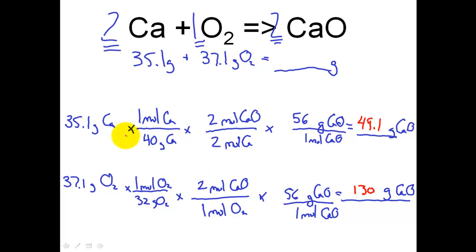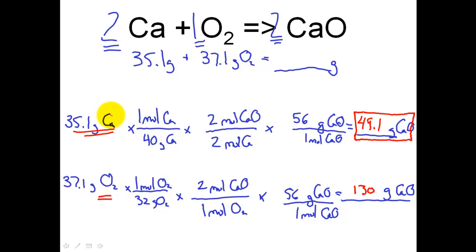When the numbers are crunched, if I want to use up all of my calcium — 35.1 grams — the most calcium oxide I can make is 49 grams. And likewise, if I want to use up all of my O₂ — 37.1 grams of it — the most calcium oxide I can make is 130 grams. So looking at the two numbers, the most calcium oxide the reaction can make is limited to 49.1 grams, because once all my calcium is used up I will have made 49.1 grams and the reaction stops. So calcium becomes my limiting reactant, limiting the amount of calcium oxide I can make. Oxygen is going to be left over — the excess reactant — because it has the potential of making 130 grams of calcium oxide. That's a simple, straightforward way of how we calculate limiting and excess reactants, and how much of the product we can make.